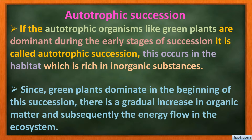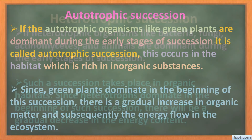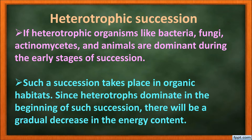Autotrophic succession: if autotrophic organisms like green plants are dominant during the early stage of succession, it is called autotrophic succession. This occurs in habitats rich in inorganic substances — since green plants need large amounts of nutrients, there is a gradual increase in organic matter and energy flow. Heterotrophic succession: if heterotrophic organisms like bacteria, fungi, actinomycetes, and animals are dominant during early stages, it is called heterotrophic succession. This occurs when the area is rich in organic substances and results in a gradual decrease in energy content.